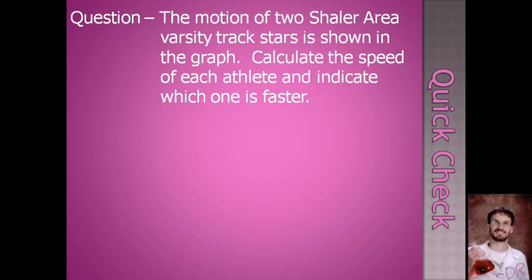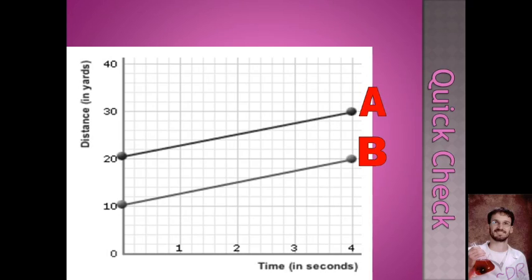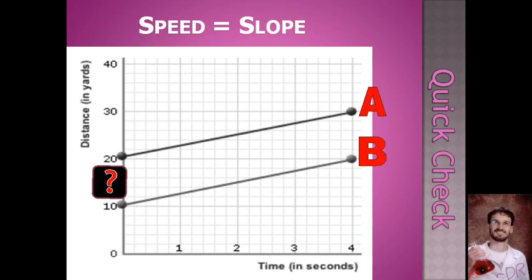In this quick check question, we have two track athletes, and you want to calculate the speed of each athlete and indicate which one is moving faster. Which one of these two athletes is running at a faster speed? Athlete A or athlete B? Reminder, speed is slope. And if you want to think about some things while you're doing this, think about what the significance of the starting points mean. That might show up in one of the booby trap questions.